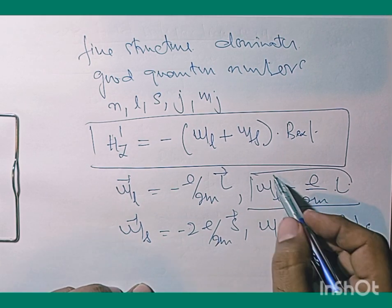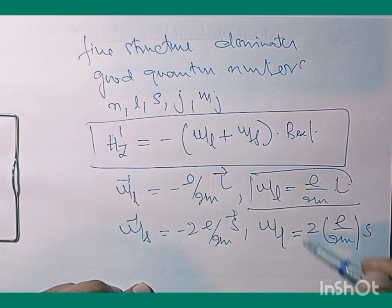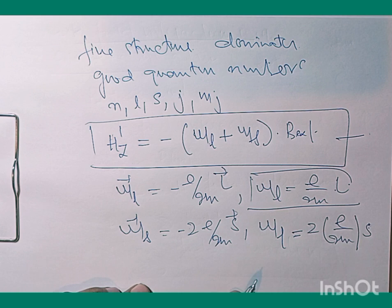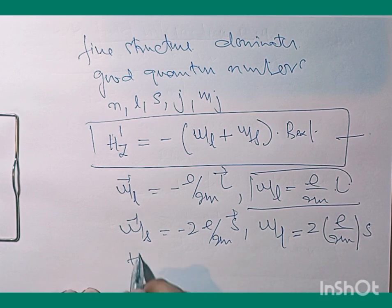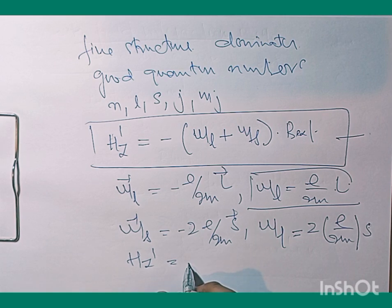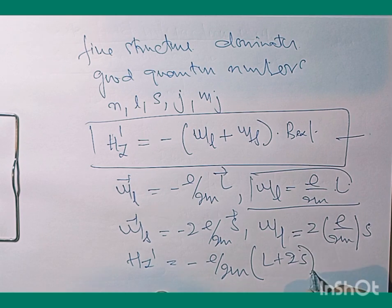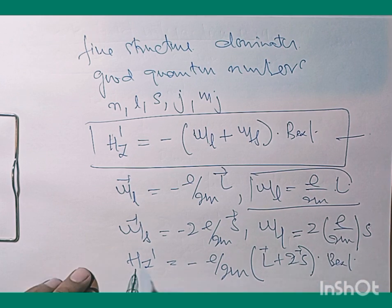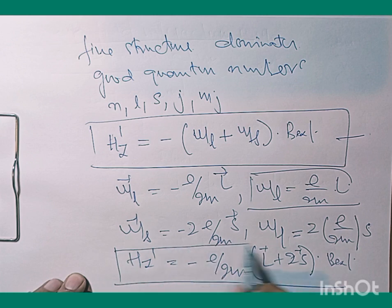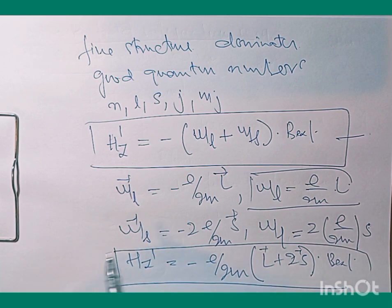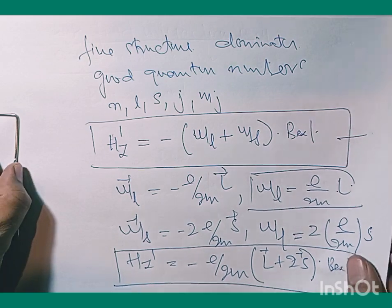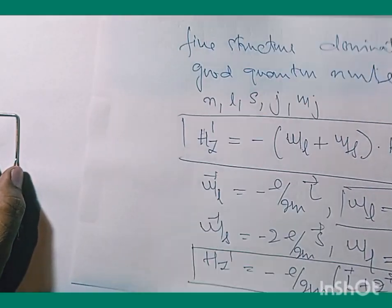Using these magnetic moment expressions, the perturbation Hamiltonian becomes H_Z' = −(e/2m)(L + 2S)·B_external. Since the external field is weak and fine structure dominates, the external field can be treated as effectively constant in this problem.